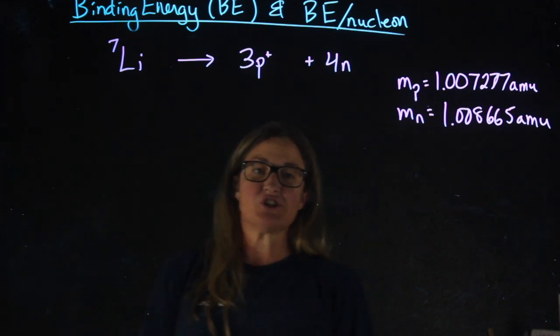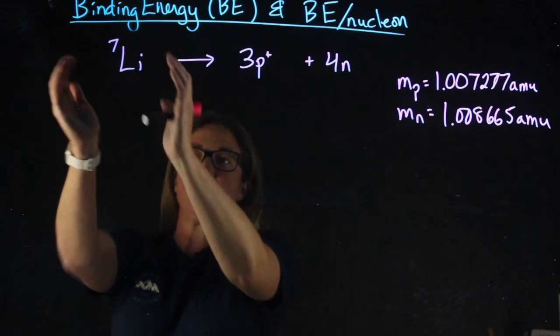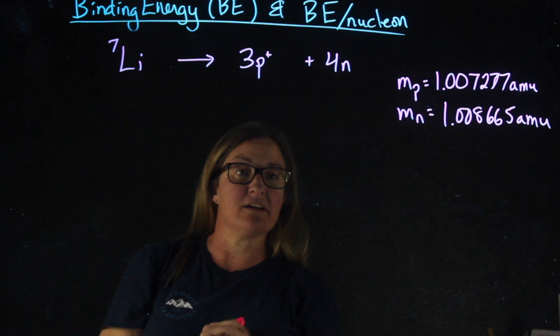Now, if we want to find the binding energy for lithium-7, we're going to consider how the mass changes when we go from lithium-7 nucleus to three protons and four neutrons.